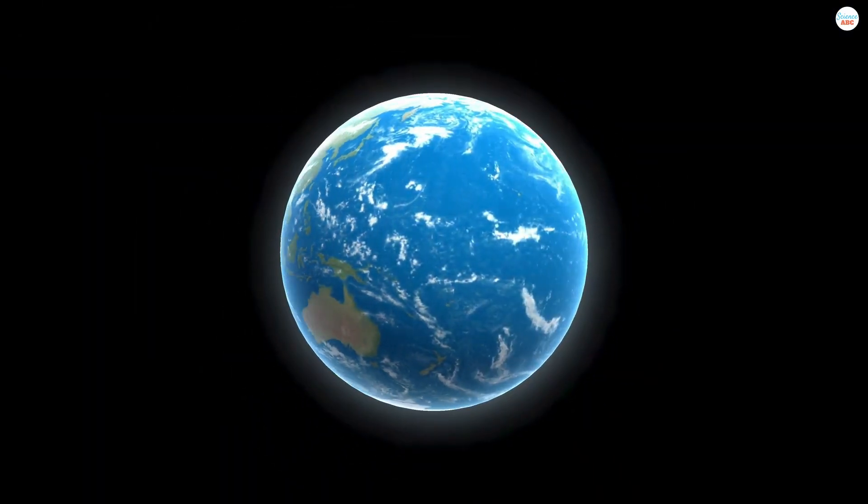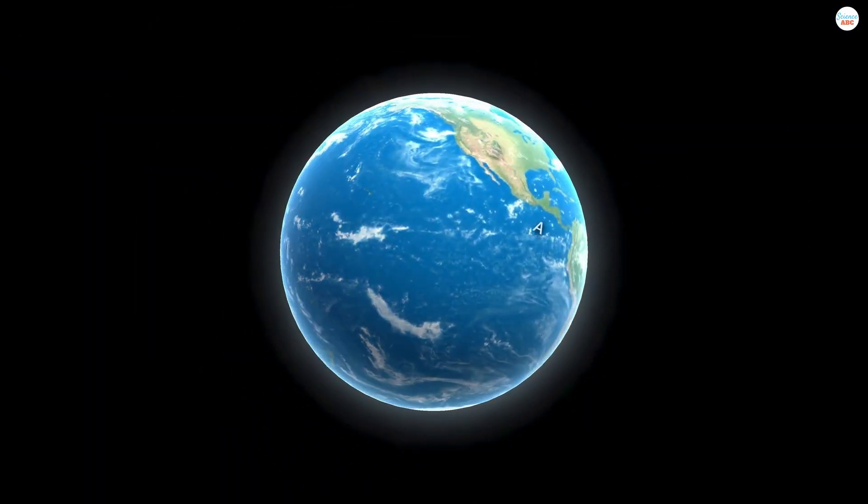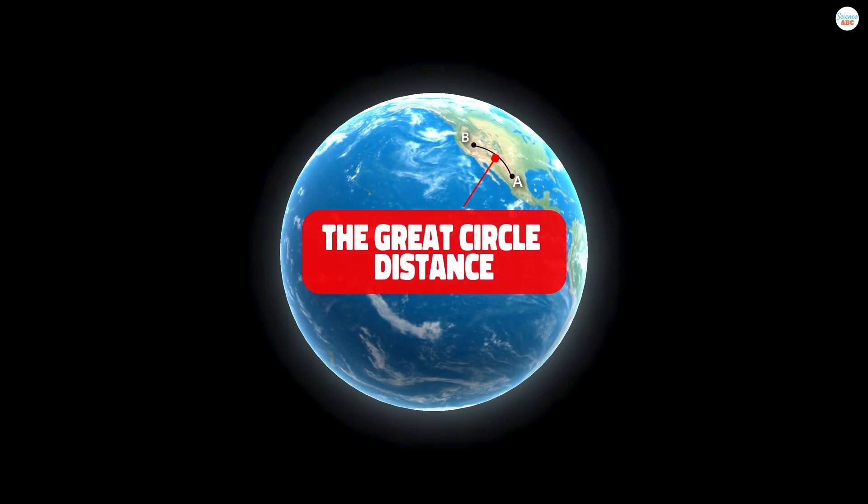However, the Earth is an approximate sphere, and the shortest distance between two points on the surface of a sphere is an arc known as the Great Circle Distance.